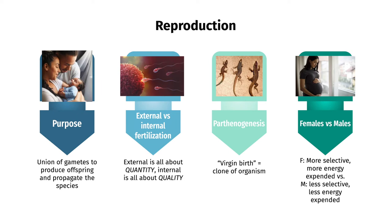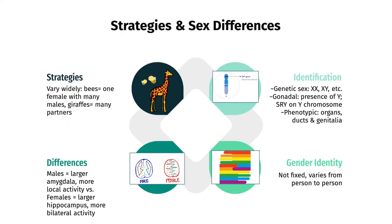Different species have different strategies, where some, like bees, will have one female with many males; some will stay with their mate for life, as in birds; some have one male with many females, as in gorillas; and some, like giraffes, have many different mates for both males and females.